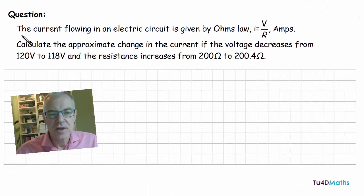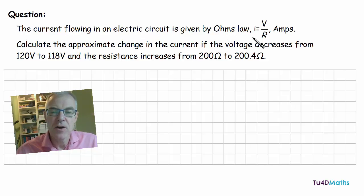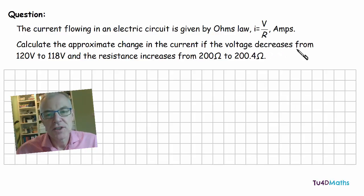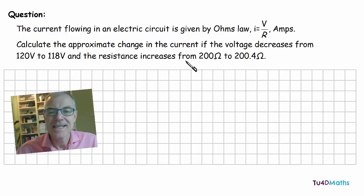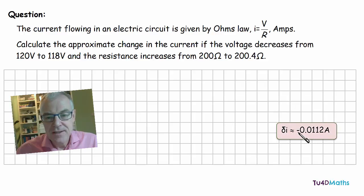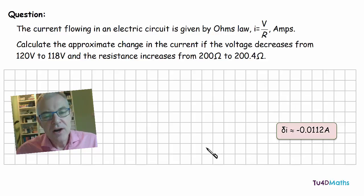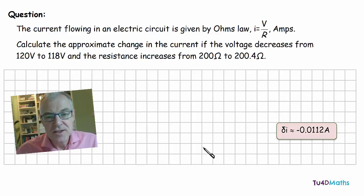Now here's a question that you could try. You're told that the current flowing in an electric circuit is given by Ohm's law, which is I equals v over r. You're asked to calculate the approximate change in the current if the voltage decreases from 120 volts to 118 volts, and the resistance increases from 200 ohms to 200.4 ohms. The answer is given as minus 0.0112 of an amp. So you should pause the video and see if you can do this question, or let the video run to see the full solution.